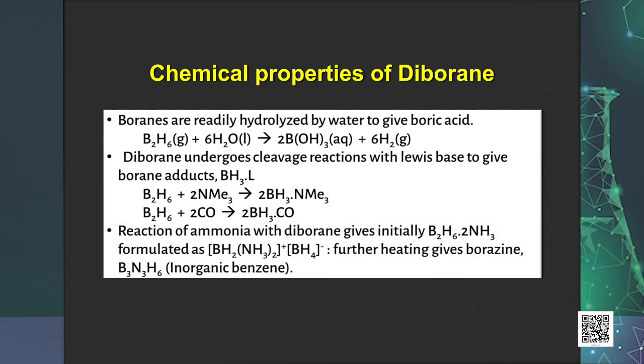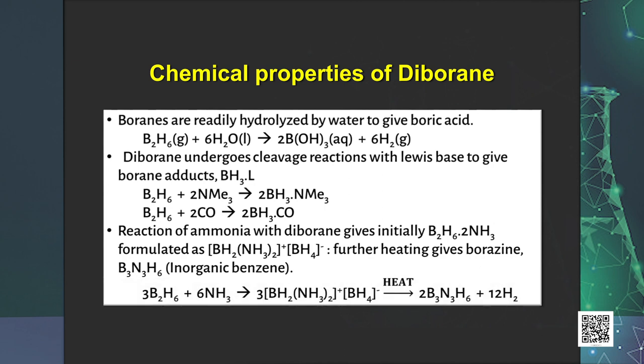When diborane reacts with ammonia, it initially gives B₂H₆·2NH₃, and on further heating yields borazine, also known as inorganic benzene, as it resembles benzene with its ring structure having alternate B–H and N–H groups. It is also aromatic. Although benzene and borazine resemble each other in structure, they differ in several chemical properties.